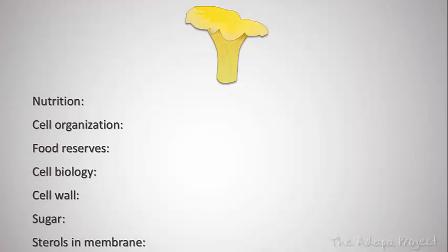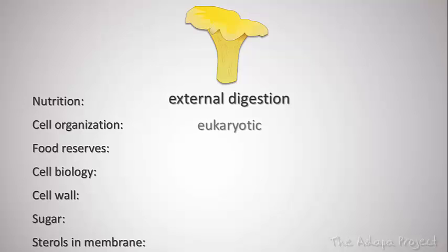There are more special features to fungi that can be listed by their function. Fungi have a special mode of nutrition called external digestion; plants do photosynthesis; animals digest internally; bacteria also digest externally but are prokaryotes. The cell organization of fungi is eukaryotic. Fungi store food reserves as glycogen, which they share with animals, while plants use starch as energy reserves.